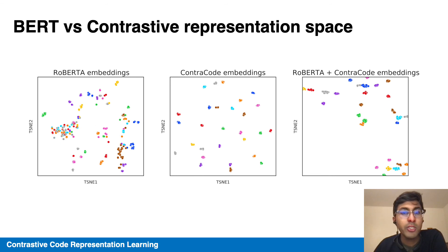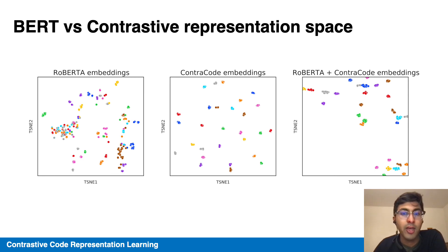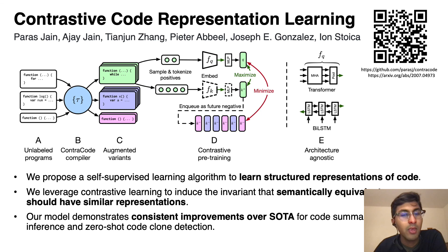We can visualize the T-SNE maps of the various representations. RoBERTa embeddings don't cluster by functionality, which is indicated by the color, but contrastive pre-training does lead to clustering according to functionality. In summary, we propose a self-supervised learning algorithm for code functionality. Thanks for listening.